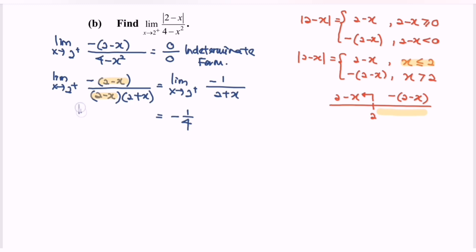So, limit when x approaches 2 from the right for the function modulus of 2 minus x over 4 minus x squared, the value of y will be approaching negative 1 over 4.